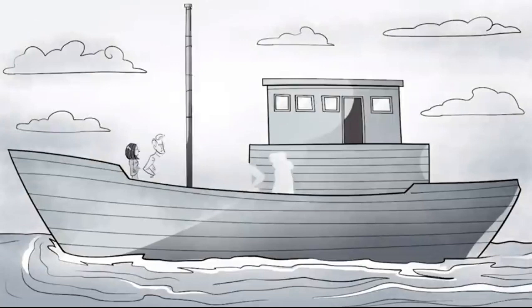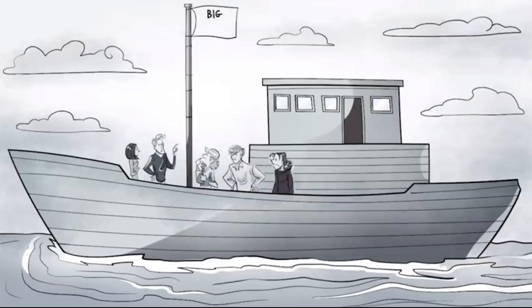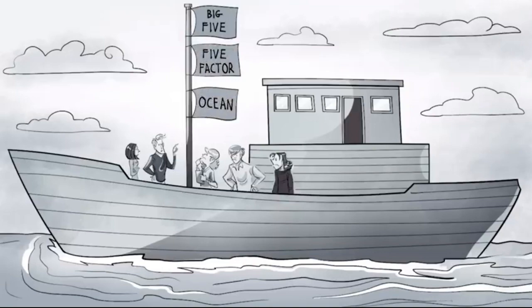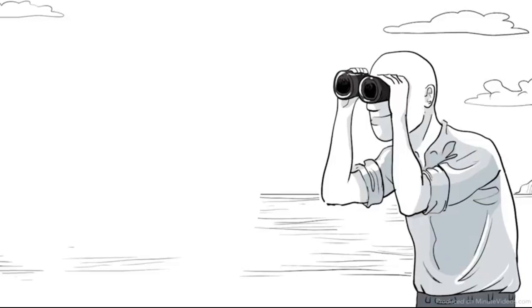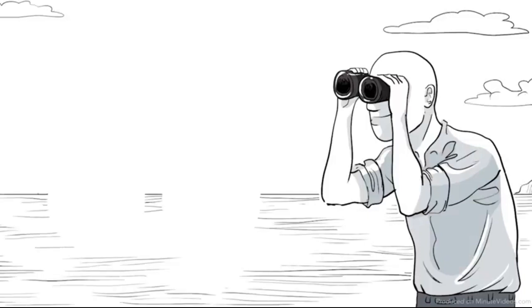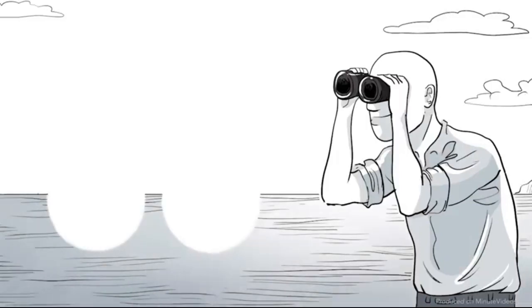The first ship carries a group of psychologists who have been traveling the oceans since the 1980s. They are investigating the Big Five personality traits which is also known as the Five Factor or Ocean model. The captain Louis Goldberg coined the term Big Five. He is thrilled when he sees the five friends at the beach, each one matching exactly one trait.